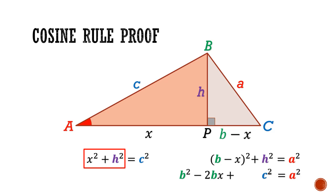Now, to get rid of the x, I can look at the triangle ABP. Notice that cosine of angle A is equal to adjacent x divided by hypotenuse c. By making x the subject, I can substitute away the x from the Pythagoras equation to get b² - 2bc cos A + c² = a².